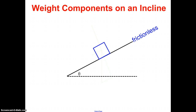We have a frictionless incline. To keep this simple at first, we'll add friction to make the problem more difficult at a later time. For sake of learning just the weight components on an incline, our incline will be frictionless. Of course, we understand that the blue box pictured here would simply slide down the incline. What we're looking at here is a snapshot of this event at any moment in time where the object is traveling down the incline, and we want to analyze the forces acting on it at this spot right here.